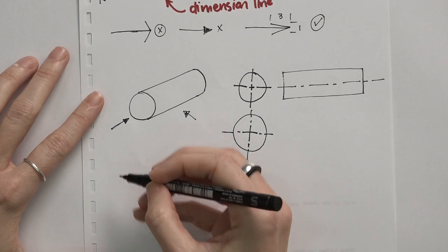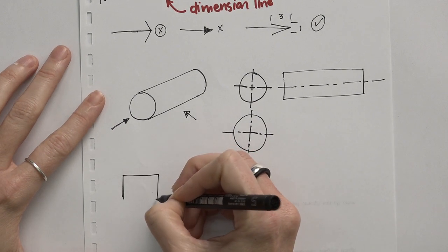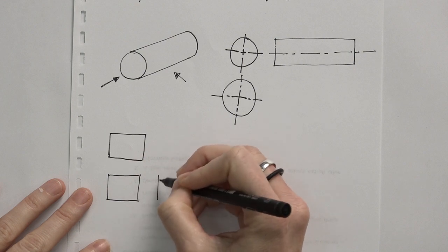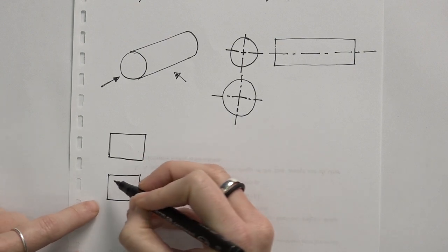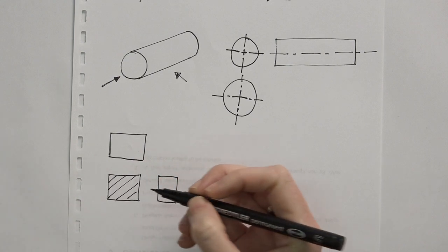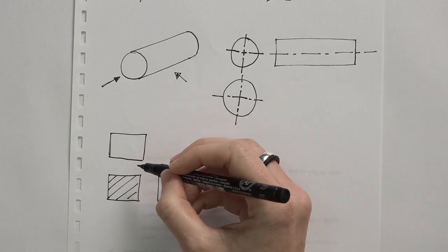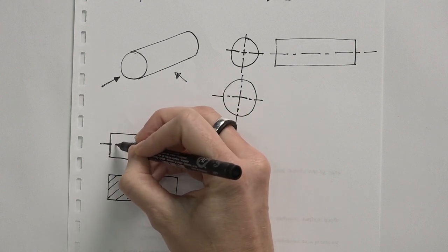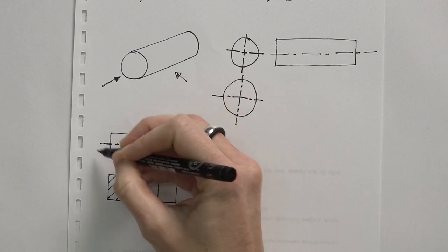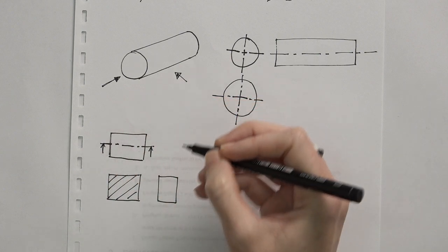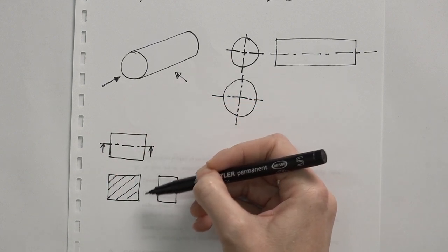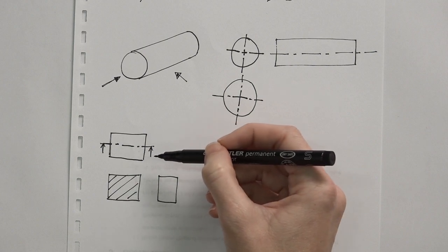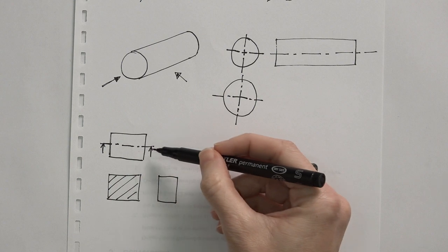When do we use a section line? Typically when we have three views — a top view, a principal view, and a right view — the principal view may need to be drawn in section. To indicate that this view is in section and where it is cut, for example right through the middle, we indicate that section line with a center line. It will have small arrows pointing to show that the drawing is made from where the arrows are pointing. We'll discuss sections at length later, but for now understand that the section line looks like a center line.